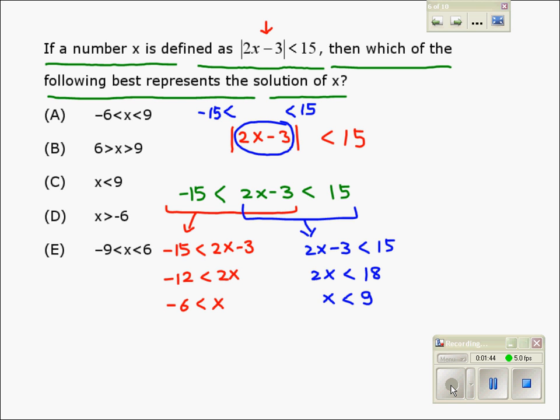We'll combine these constraints by placing them on the number line. We'll draw the number line, and place negative 6 here, and 9 here. The constraints say x is more than negative 6, this way, and x is less than 9, this way.